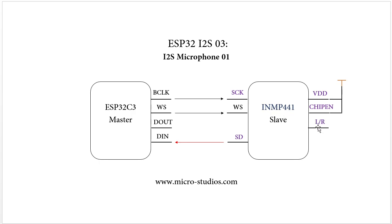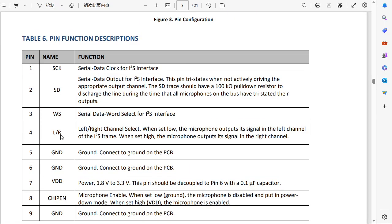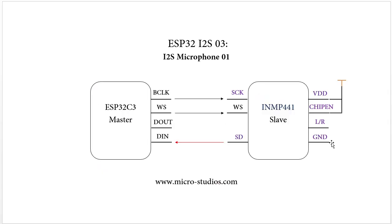We also have the left and right channel select and ground. From the datasheet, we can check the left and right channel behavior: if we set it low, it will be the left channel; if we set it high, it will be the right channel. Here we set it as low, making this microphone the left channel.